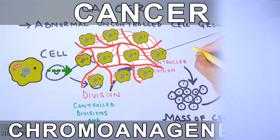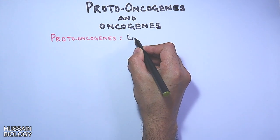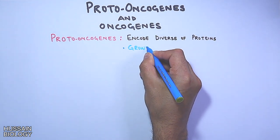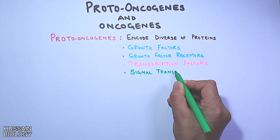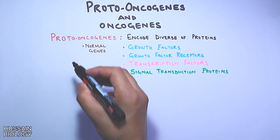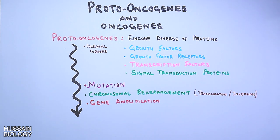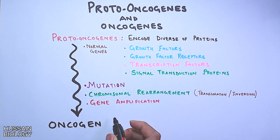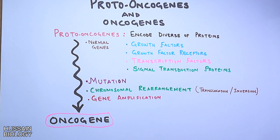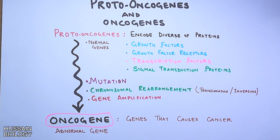In the previous video we discussed about cancer and its general overview. Now in this video we'll be discussing about proto-oncogenes and oncogenes. Proto-oncogenes are the genes that encode different kinds of proteins — growth factors, growth factor receptors, transcription factors, signal transduction proteins, and more. Proto-oncogenes are the normal genes within our body, but when these genes undergo mutations, chromosomal rearrangements, or gene amplifications, they transform into oncogenes. Oncogenes are abnormal, altered forms of proto-oncogenes that have the ability to cause cancer.